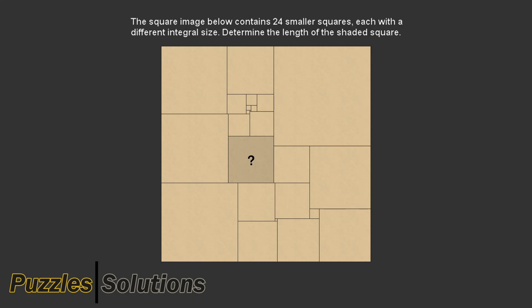Matrix 67, Puzzle 21. The square image below contains 24 smaller squares, each with a different integral size. Determine the length of the shaded square.